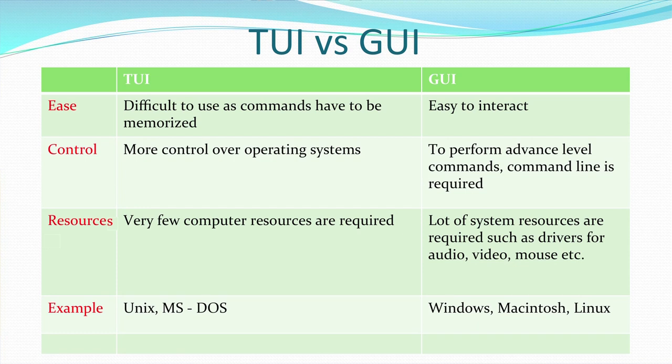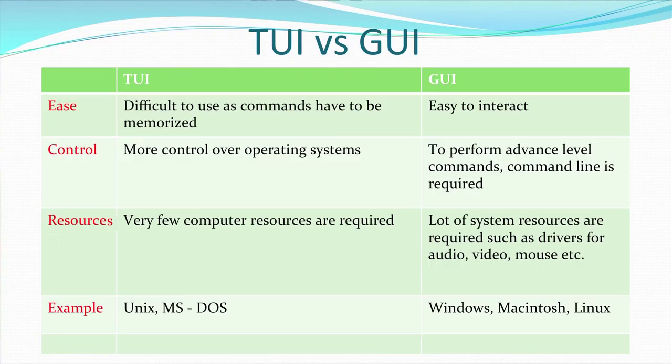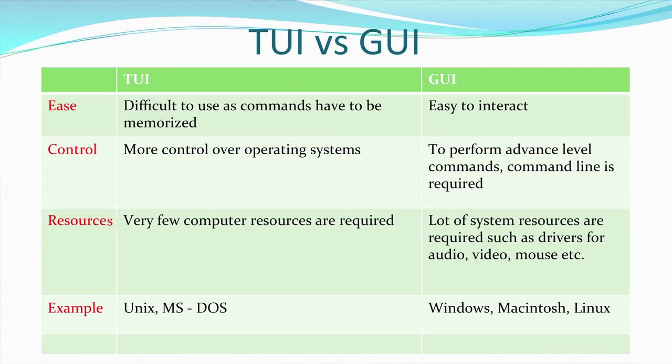This slide compares the text user interface versus the graphical user interface. The text user interface is difficult to use because commands have to be remembered and typed in, and any error means the command will not execute. In contrast, a graphical user interface is easy to use. Regarding control, the text user interface has more control over the operating system. For certain advanced functions in a GUI, you still need the command line — for example, pinging requires going to the command prompt.